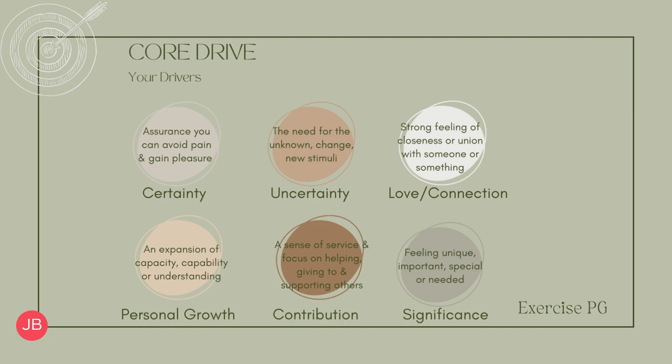The first emotional and physical need is certainty — the need to feel like things are safe, you know what's coming, and having that assurance in your life. We also have the need for uncertainty and variety. We need spice in life — spontaneity and surprises to keep things interesting. Can you imagine if life was plotted out to the last second? It would be absolutely boring. We need that uncertainty to create the spice of life.